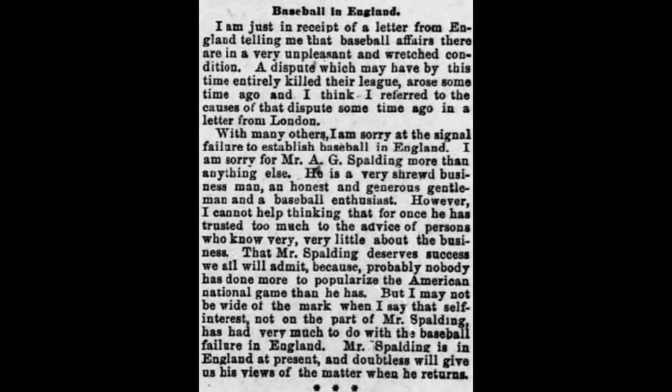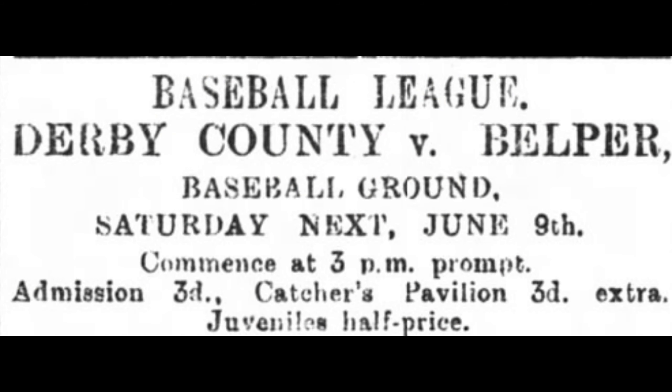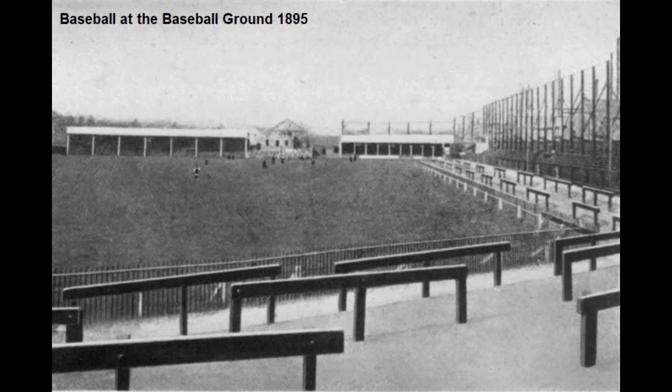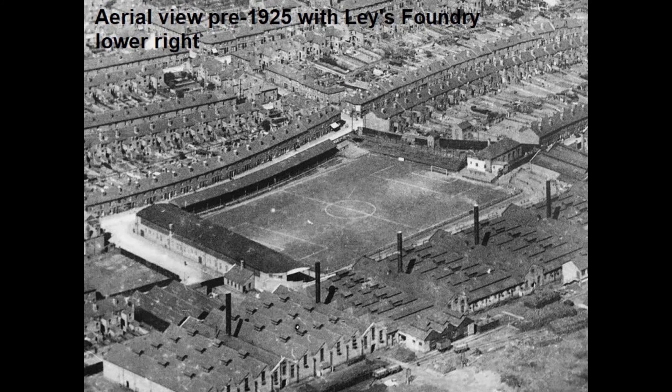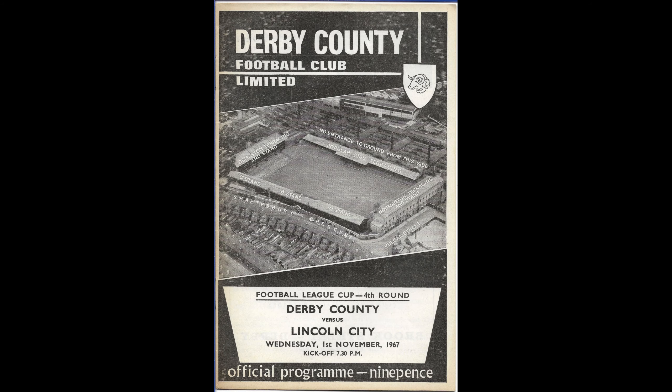Newspaper articles seem to indicate there was an agreement to only use English pitchers — apparently because they were worried the Americans would throw curveballs. It seems they continued to play baseball at the Baseball Ground, though at some point the baseball league in Britain became chiefly amateur. The Derby County Football Club moved into the Baseball Ground in 1895, and over the years the park changed — gradually it became enclosed and was turned into a full-fledged soccer stadium.